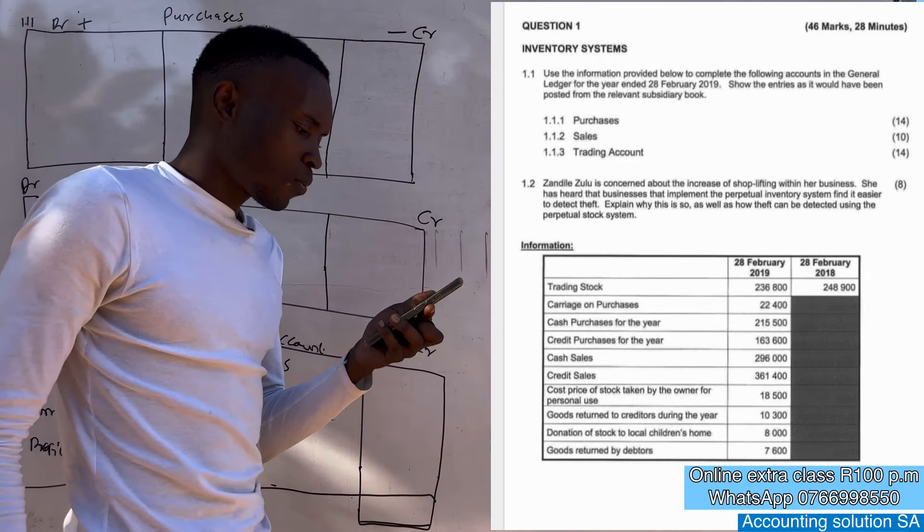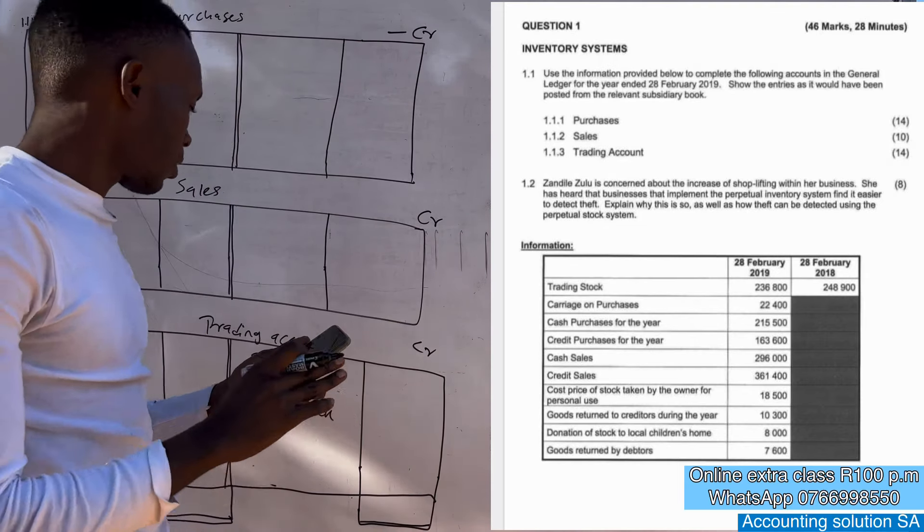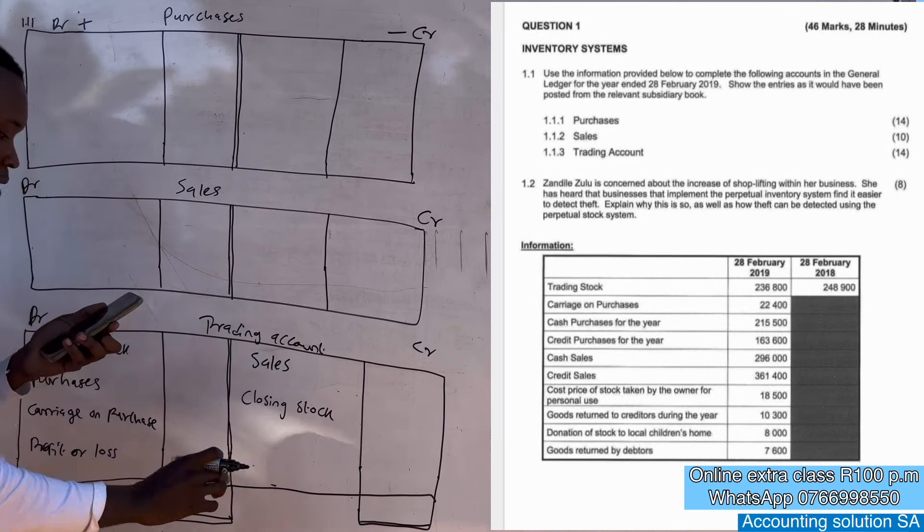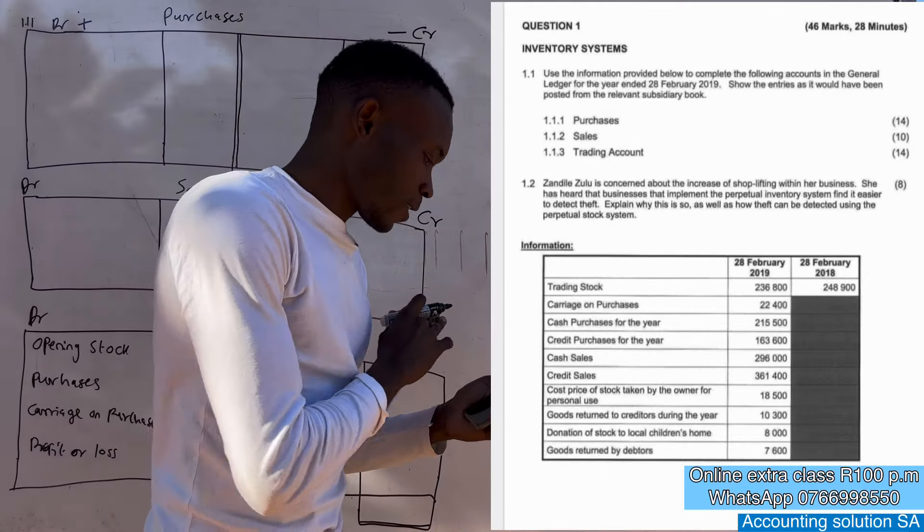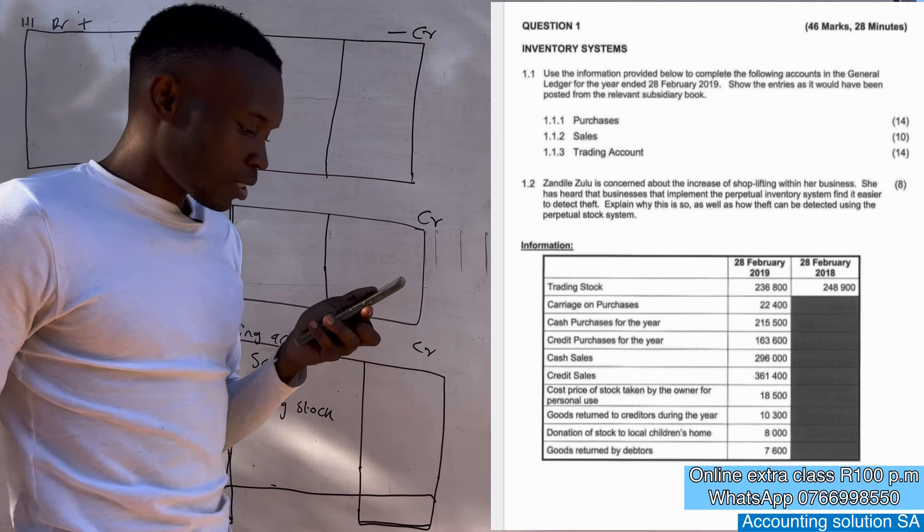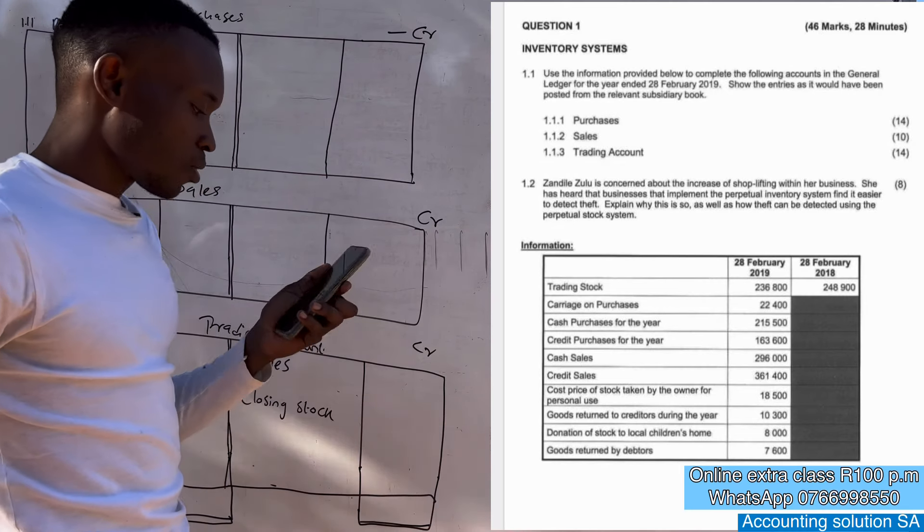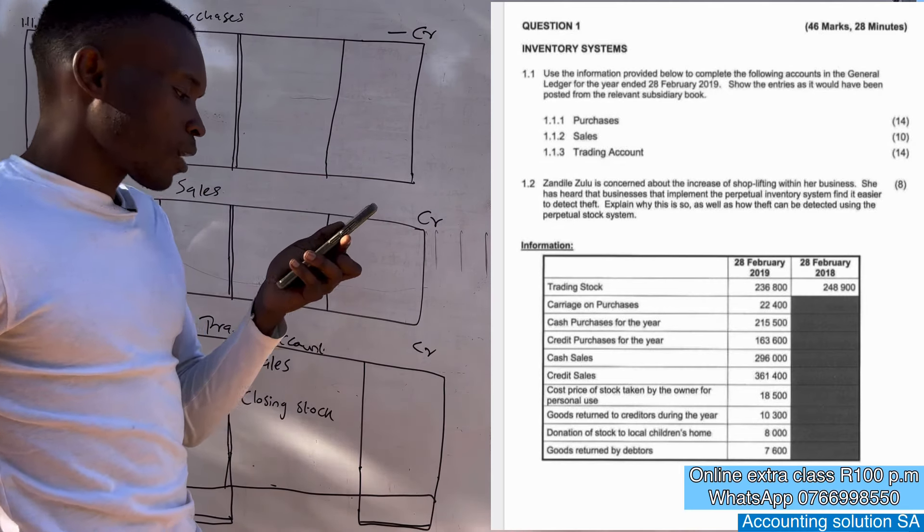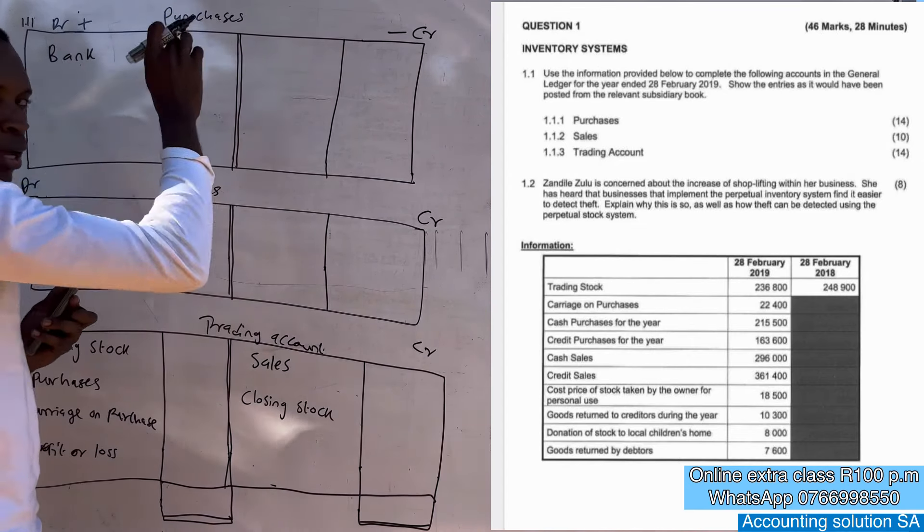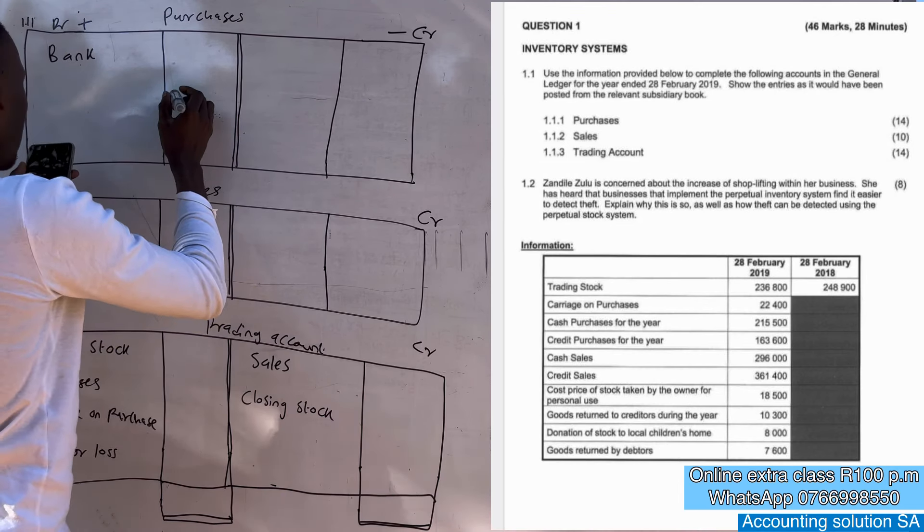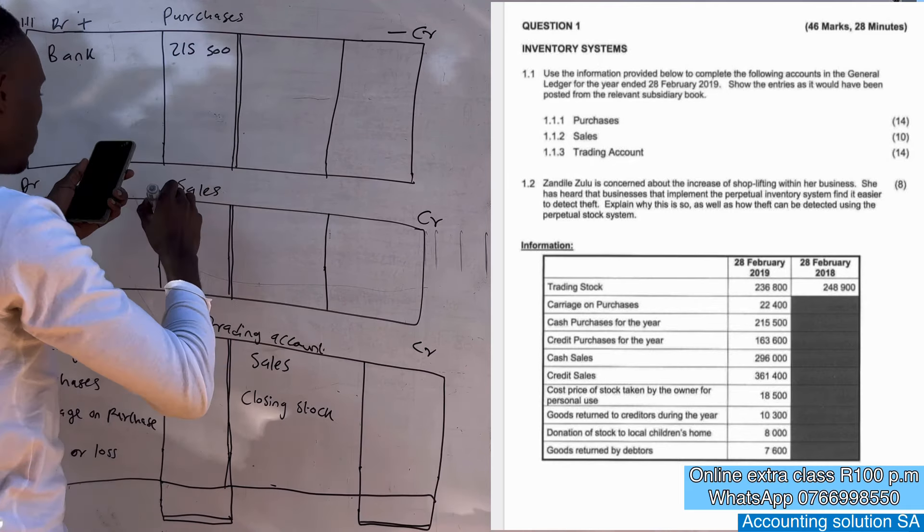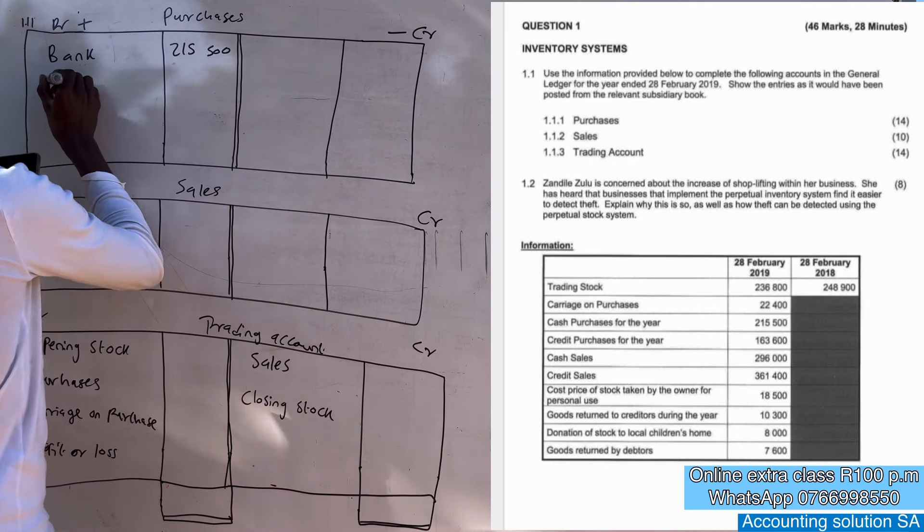Number one, they give us a trading stock at the beginning and at the end, opening and closing. You will find it here, opening and closing. Let's leave it for this part, let's start by preparing purchase. Carriage on purchase 22,000 is for this one, cash purchase for the year, this one will purchase, is going to increase our purchases. The second purchase is 215,500 credit purchase.